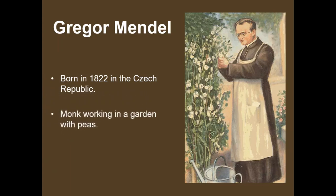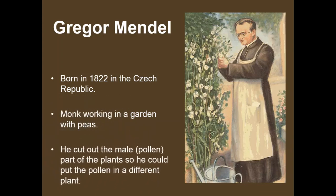He was a monk who worked in a garden with peas. What he did in that garden was take the male part — the pollen of a pea plant — and pollinate different plants by hand. That way he knew exactly which plant was pollinating which plant, and he could follow the traits in their offspring to see what traits were showing up more or less. We'll talk more about that later.